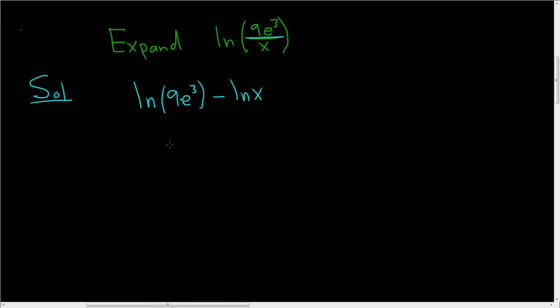Here we're multiplying, so we'll use the product rule. So this is the natural log of 9 plus the natural log of e cubed minus the natural log of x.